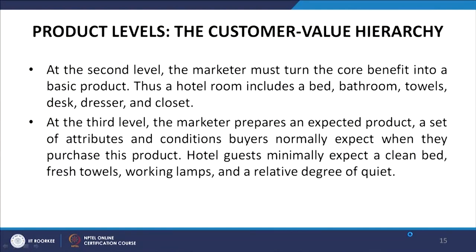At the second level, marketers must turn the core benefit into a basic product. Thus, a hotel room includes a bed, a bathroom, a towel, a desk, a dresser, and a closet. At the third level, marketers prepare an expected product — a set of attributes and conditions buyers normally expect when they purchase this product. In the case of hotel guests, they minimally expect a clean bed, fresh towels, working lamps, and a relative degree of quietness so they can sleep.